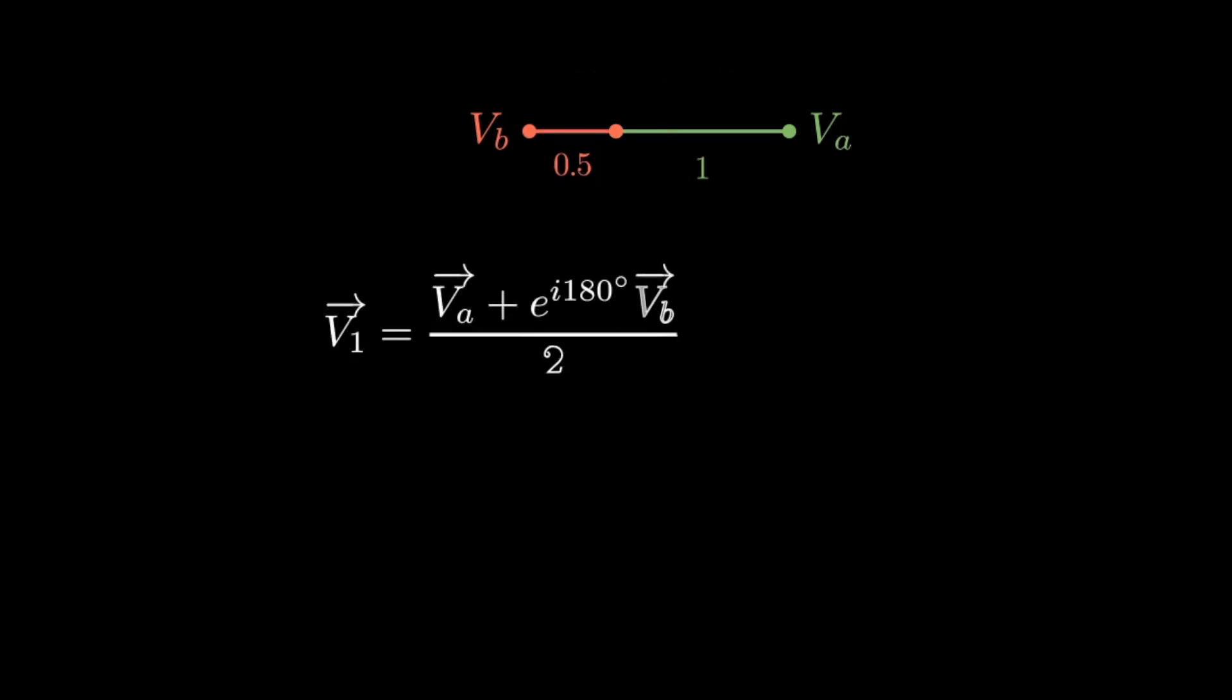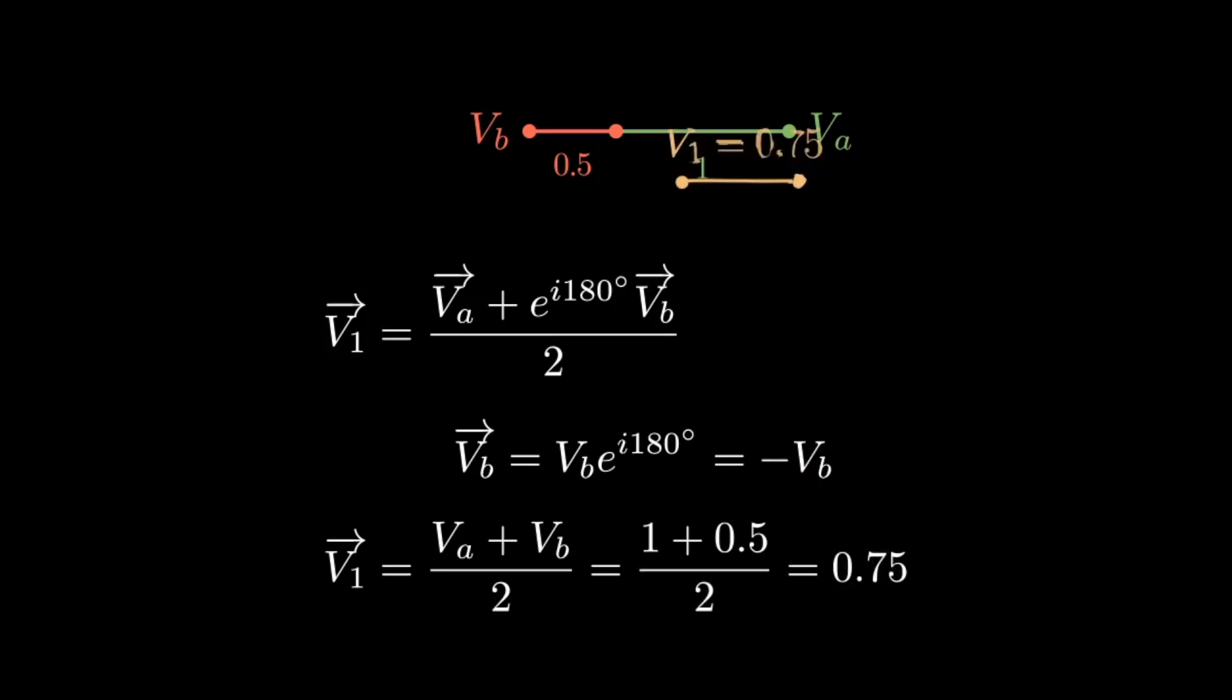Another way to measure unbalance between VA and VB is to first rotate the VB phasor 180 degrees, and then take the average again. I'll call this value V1, and it describes the average of the magnitudes of VA and VB. This calculation provides the distance from the midpoint of the system to the end of the VA-VB line.